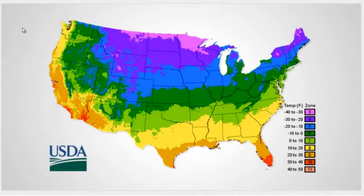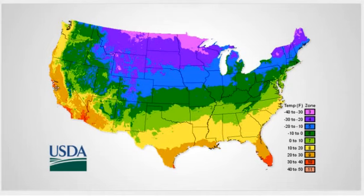Lots of things influence that temperature. Of course, there's latitude — how far south or how far north you are. But elevation comes into play quite a bit too. And also your proximity to the coast; things tend to be a little bit warmer along a coastline. California is itself its own little world — it's got probably five or six zones in the state.